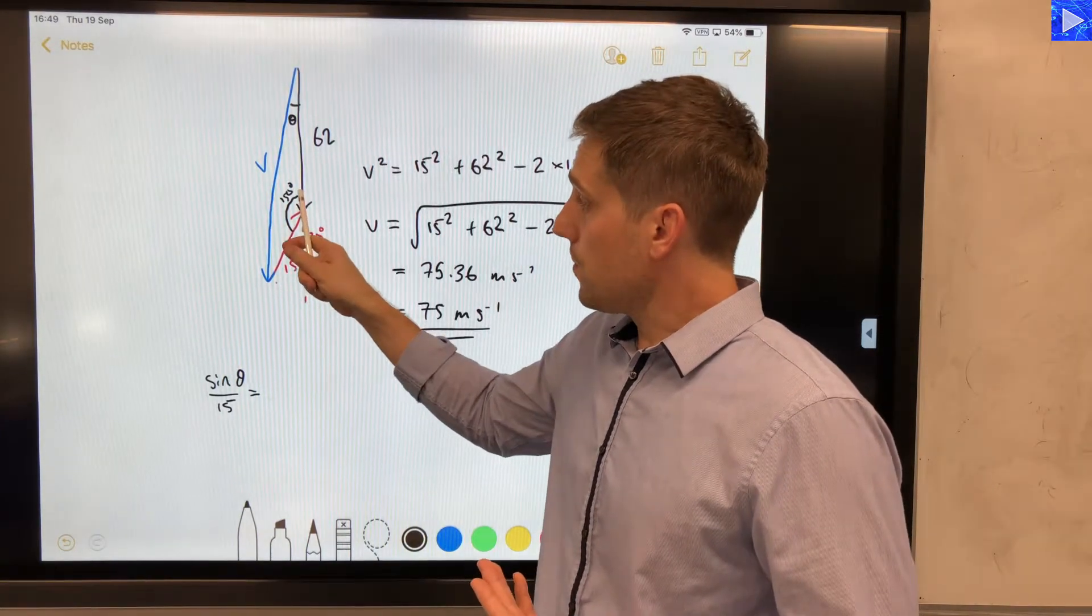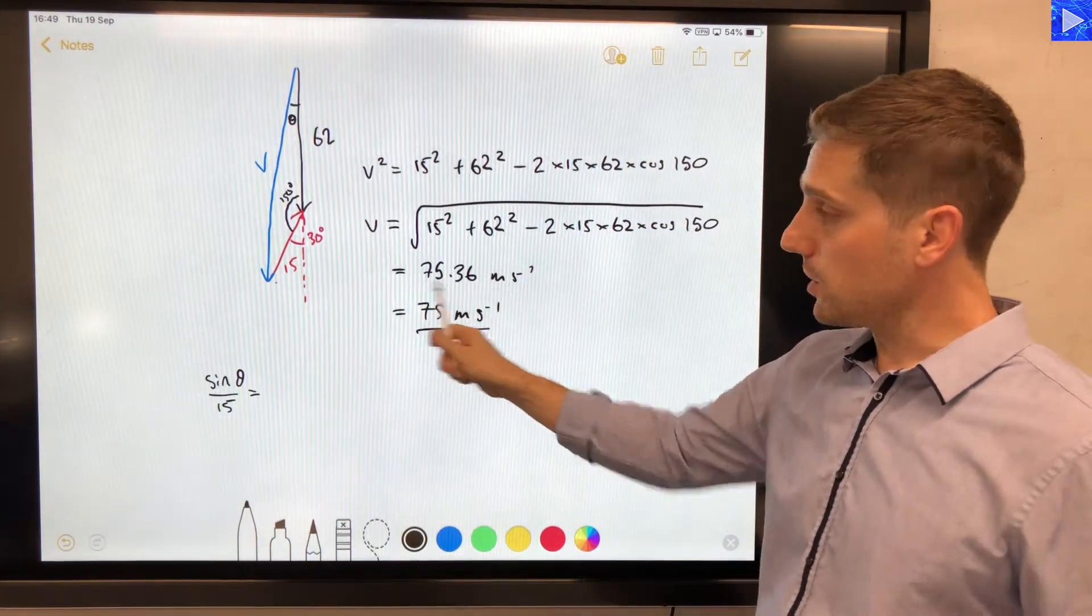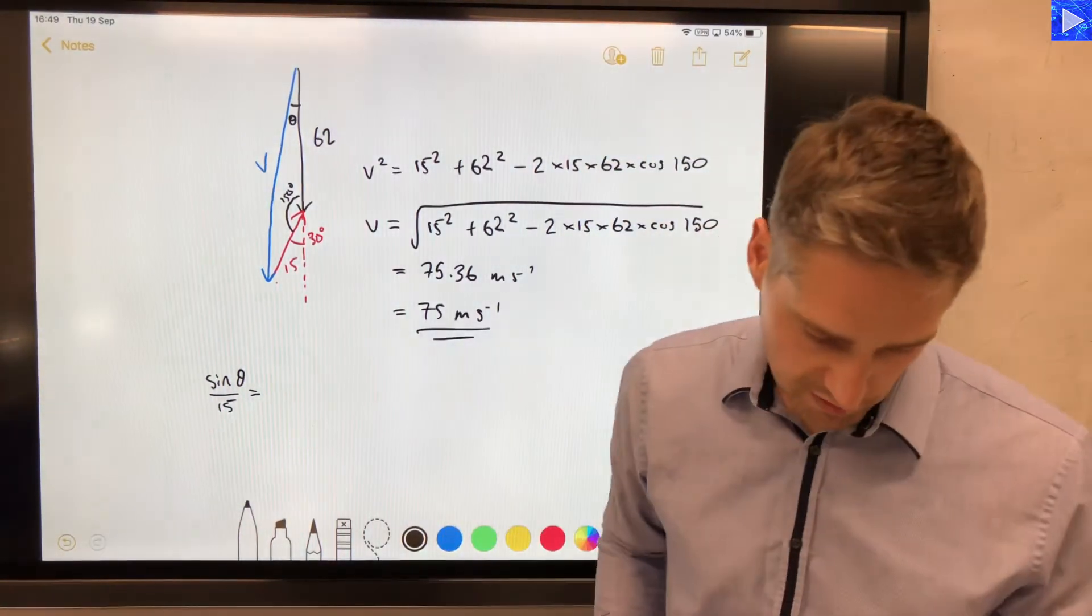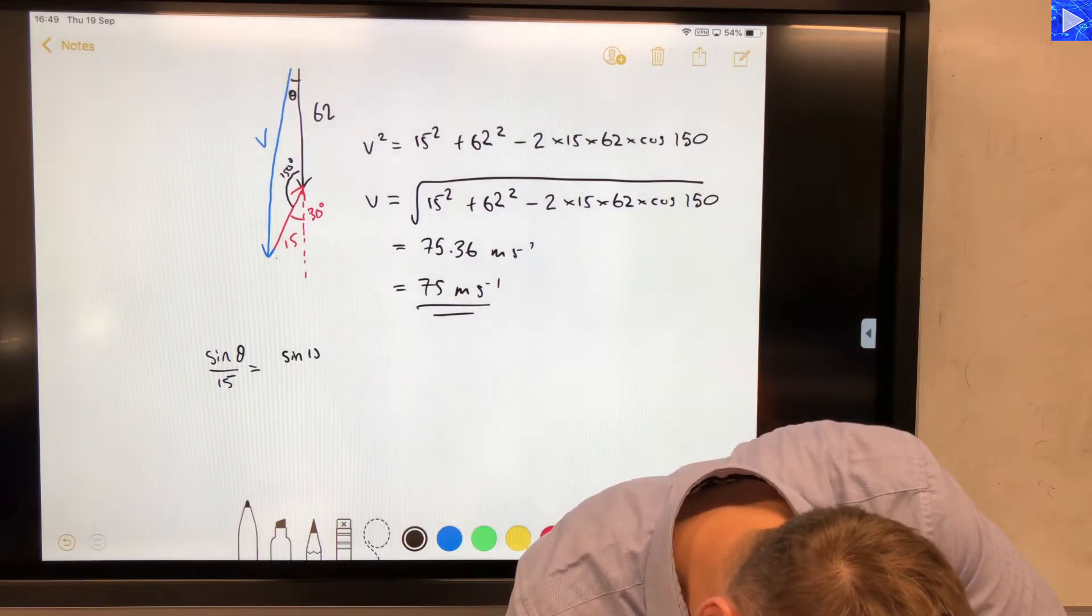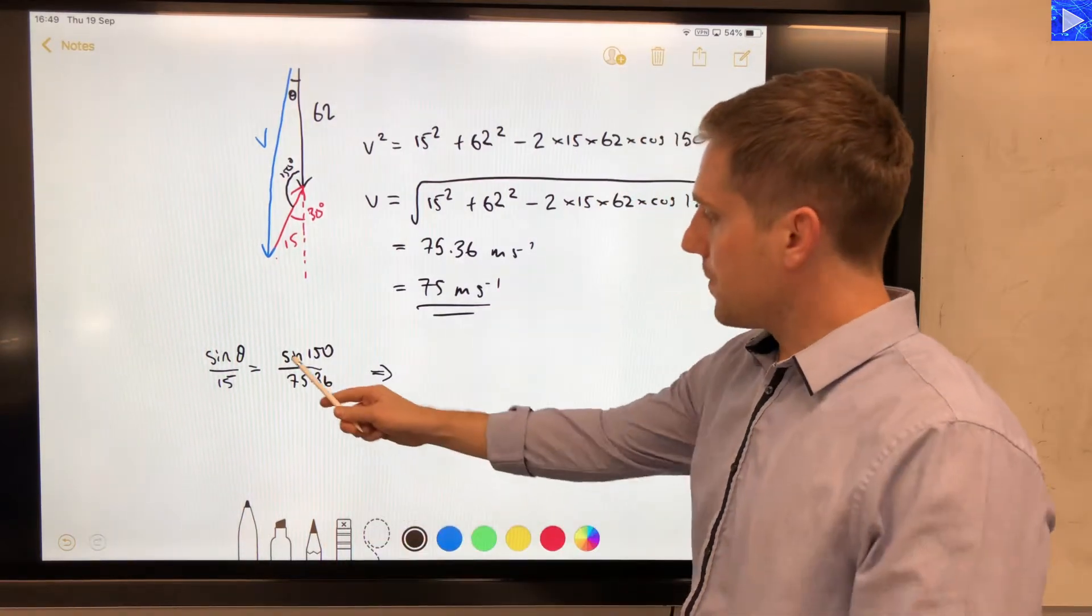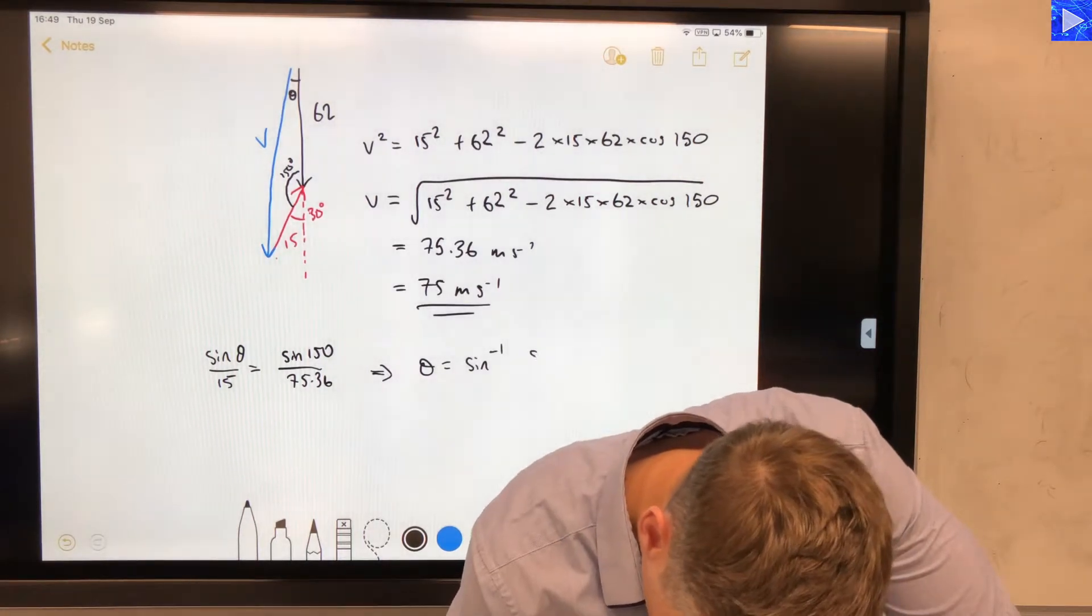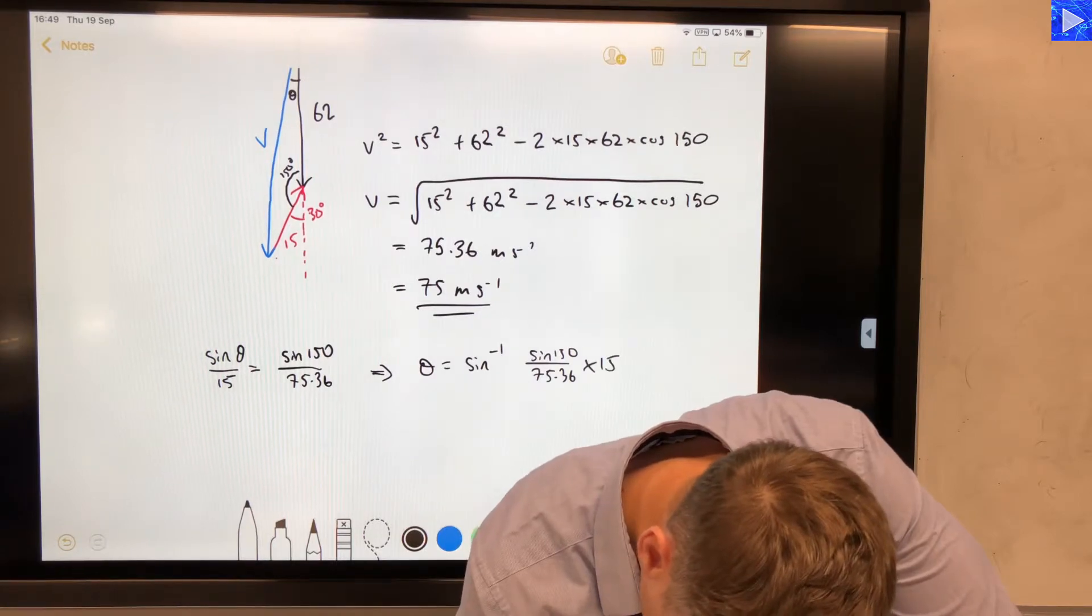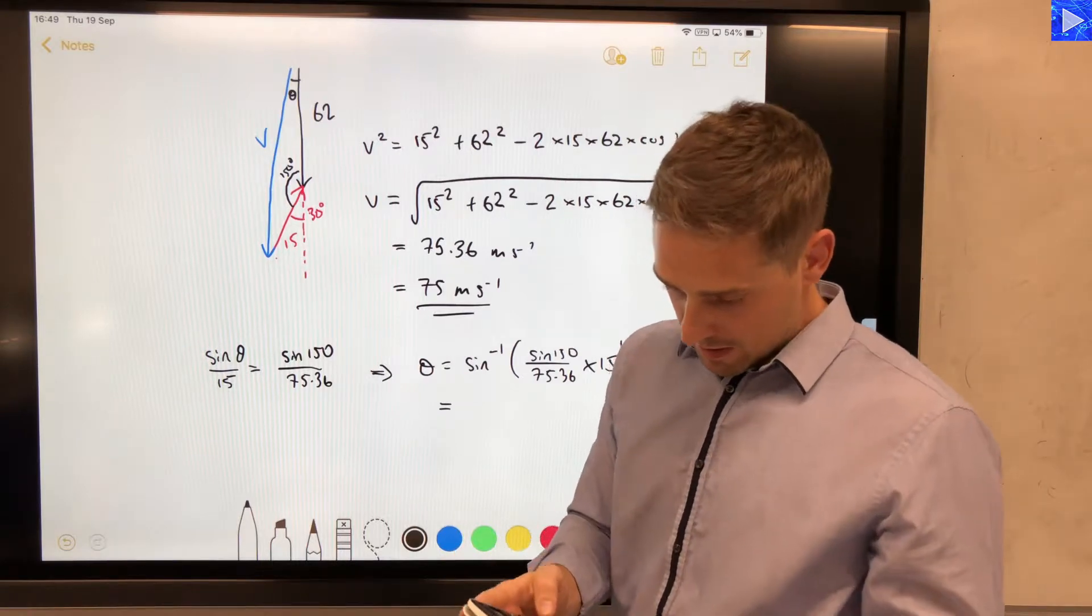In our triangle we only know this angle, so we're going to do sine 150 divided by the velocity that we just determined. I'm going to use the 4 significant figures value here. In fact, I can use, I've still got it in my calculator, so I can just use the full value that I calculated. So that would be sine 150 over 75.36. Okay, rearrange that for the unknown theta. Theta is inverse sine of sine 150 over 75.36 times 15. Okay, and now do that calculation.